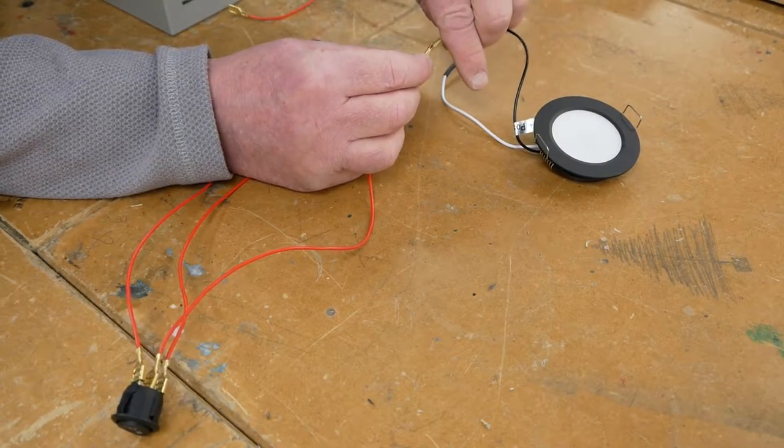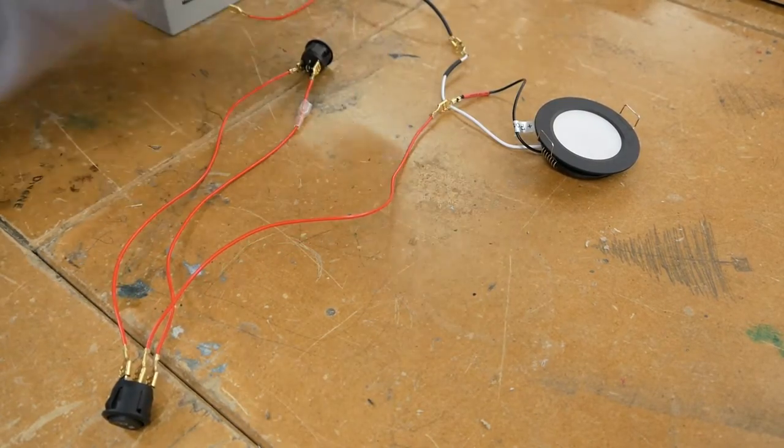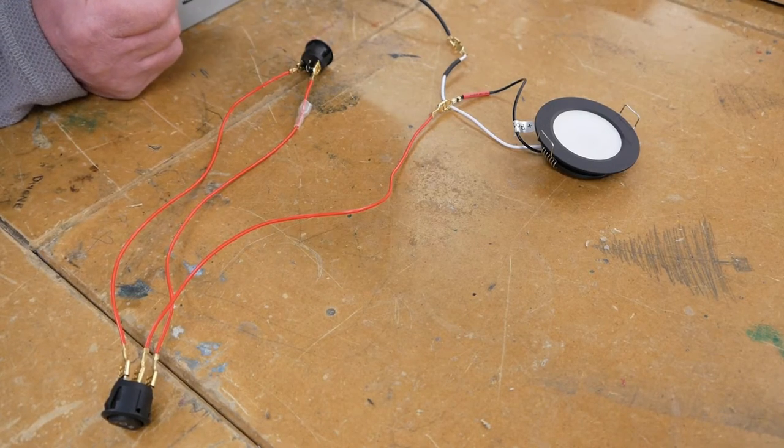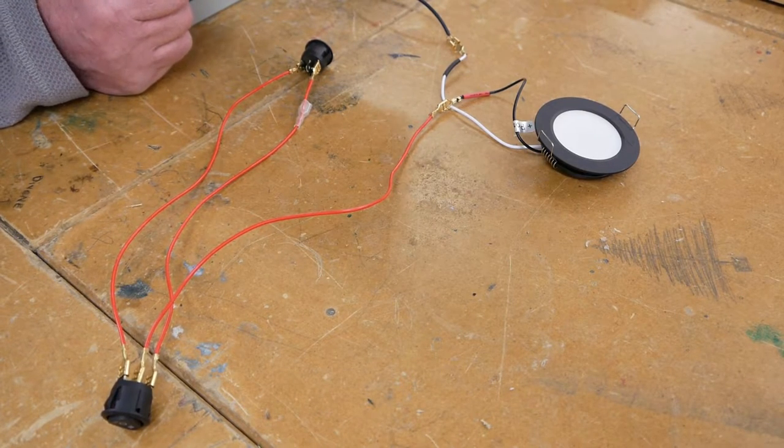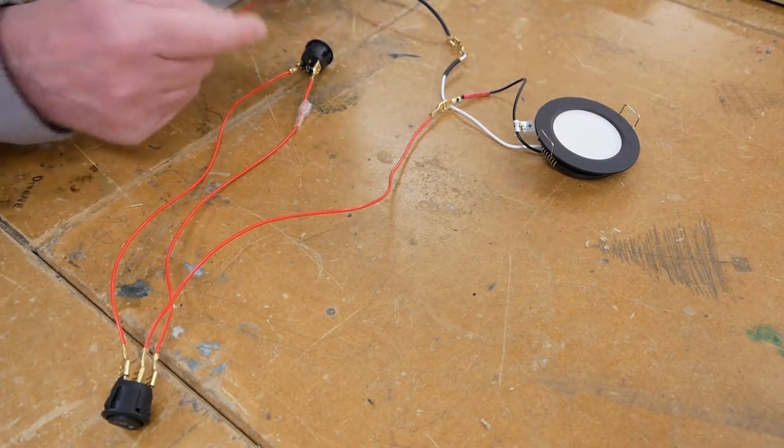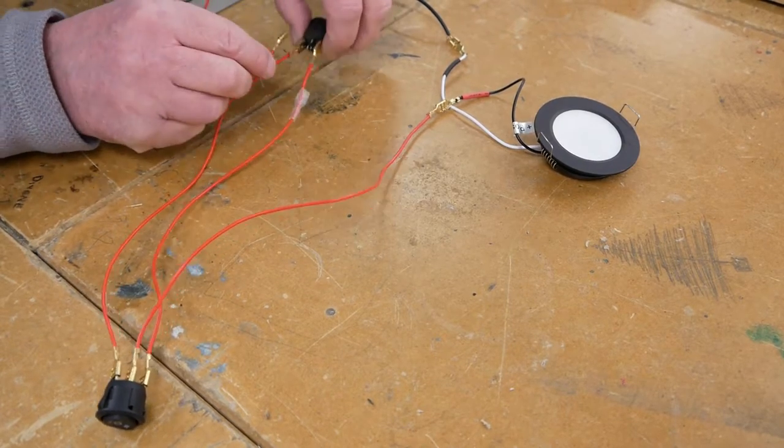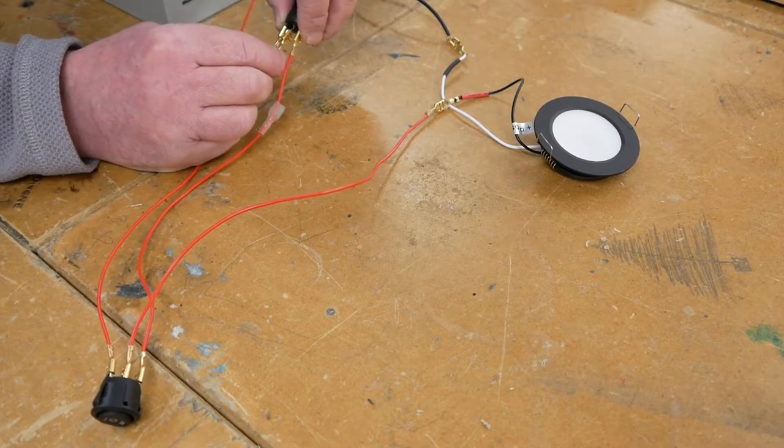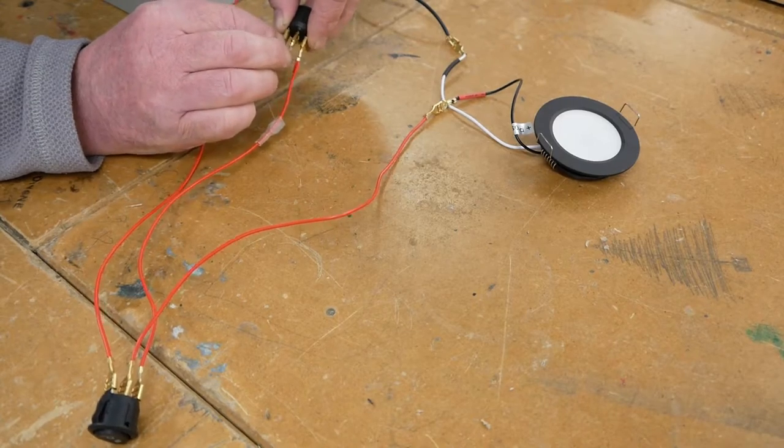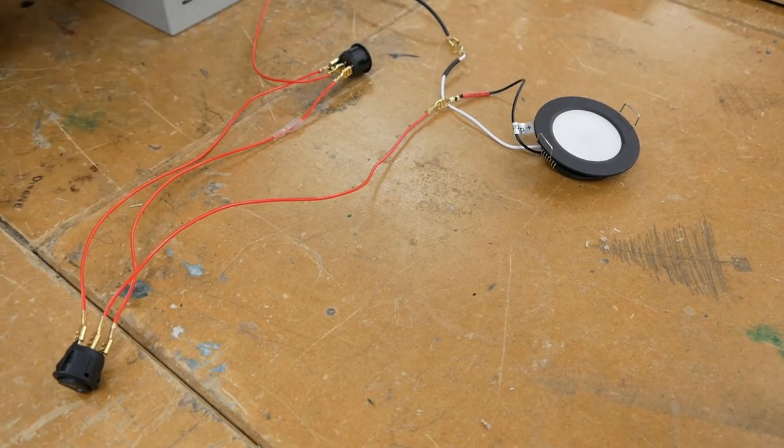All I have to do now is connect up this live feed coming from the fuse box, so that will go into the middle terminal of this switch here. Let's put the isolation switch on.